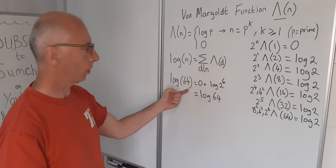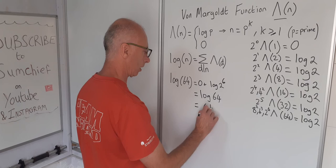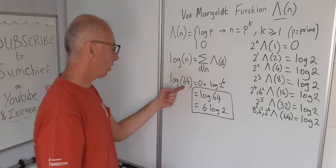We do, of course, also say it's 6 log 2, in which case log of 64 is also 6 log 2. Okay.